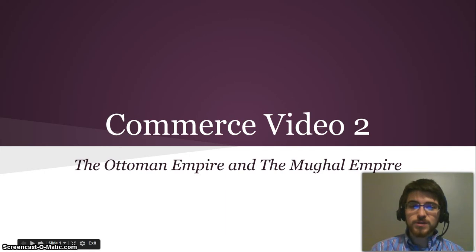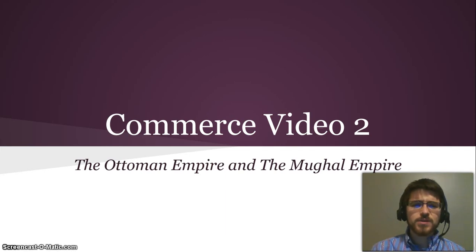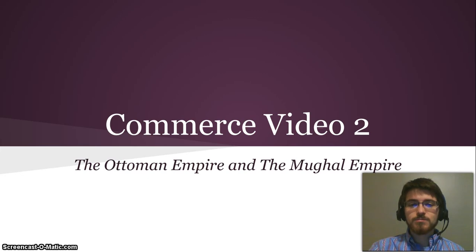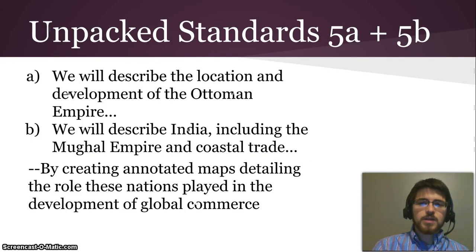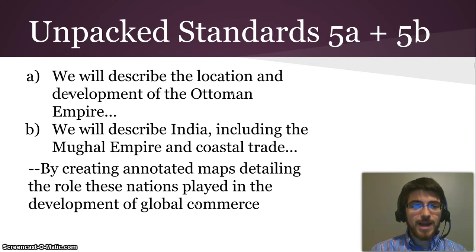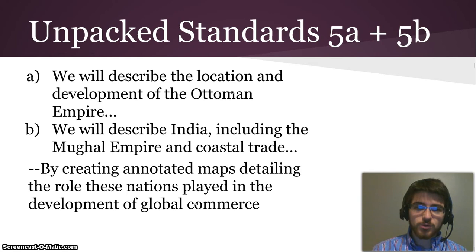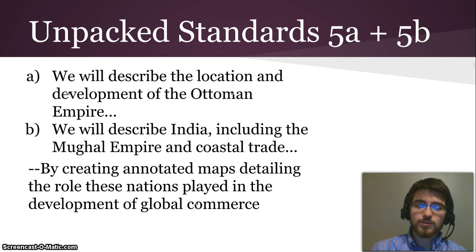Welcome to the second video in this series on commerce of the 1600s and 1700s. This one is on the Ottoman Empire and the Mughal Empire, two empires that we mentioned last time but didn't really get to talk about. In 5a and 5b we will describe the location and development of the Ottoman Empire and India including the Mughal Empire and coastal trade, by creating annotated maps detailing the role these nations played in the development of global commerce.